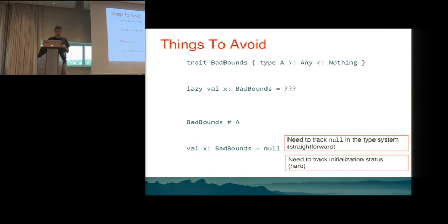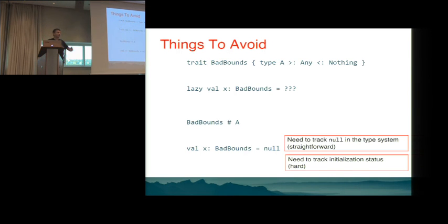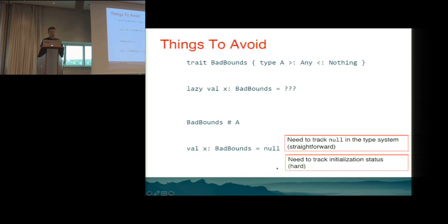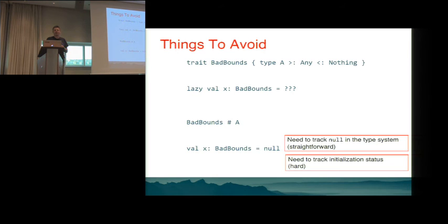Null is still a problem: you can write `val x: BadBounds = null` and use x as a prefix of a type selection. Null gives no information about whether bounds are good or bad, so we probably need to track null in the type system. There's also initialization: Scala inherits Java's default values, so a value can be null before initialization completes. Tracking initialization status is very hard but would be worthwhile, as it's a source of many errors in typical Scala programs.